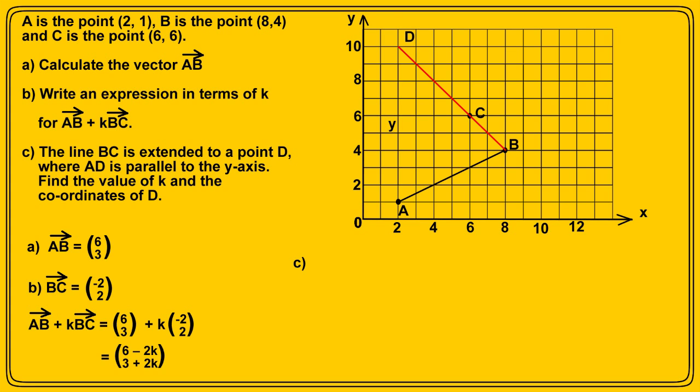But we know from our work in part B that this is equal to (6-2K, 3+2K). In other words, that vector is the low road, the direct route.